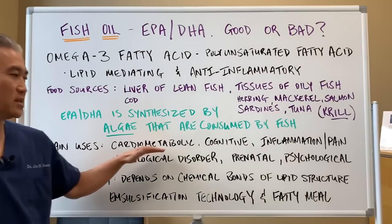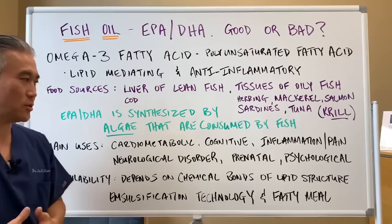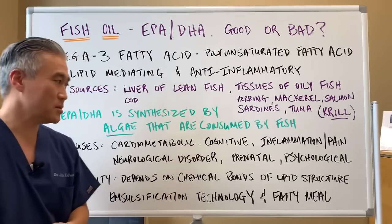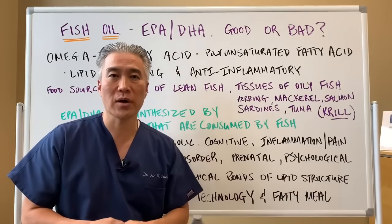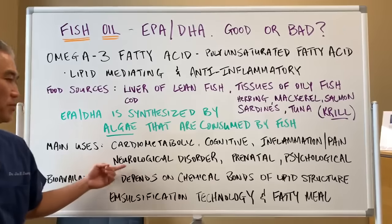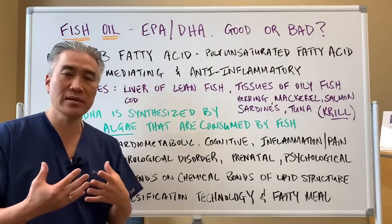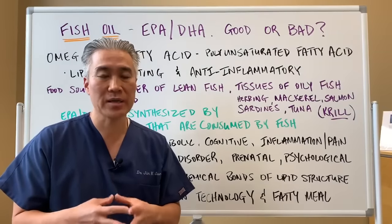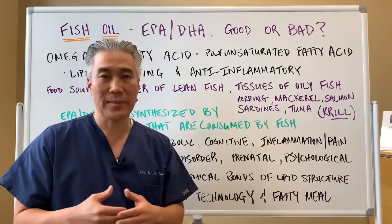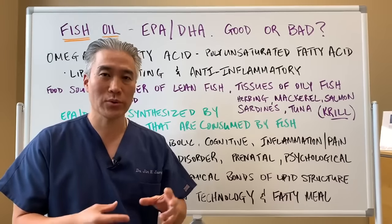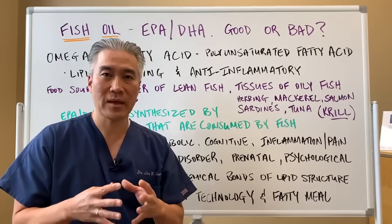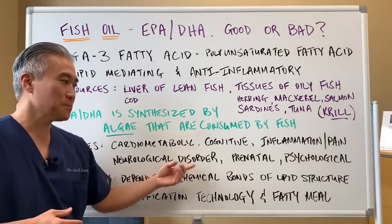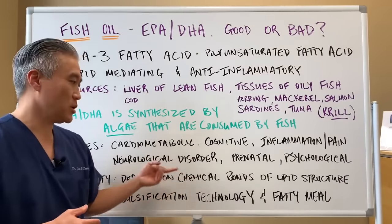The main uses of fish oil are cardiometabolic — cardiovascular issues and so forth — cognition or brain function, and inflammation and pain such as joint pain. If it's good for inflammation, it's also good for skin conditions that are inflammatory, as well as neurological disorders. You need fish oil to make cells healthier because every cell in our body has a phospholipid bilayer, requiring oils like fish oil to create that structure.